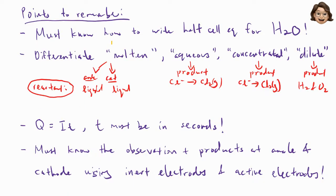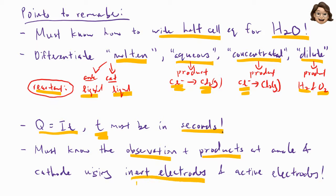Points to remember: you must know how to write the half-cell equation for H2O. Differentiate the word molten, because molten means the reactant, whether it is gaseous or solid, it will be in liquid form. Aqueous: if you have halide ion, it will be your product. If you have concentrated, again the halide ion. If you have dilute, just choose water because dilute means there's a lot of water. For Faraday's law, remember the time must be in seconds, and you must know the observation and products at cathode and anode using both inert electrodes and active electrodes.